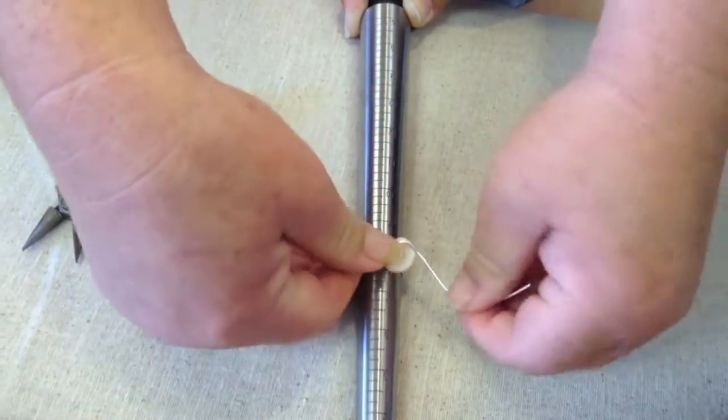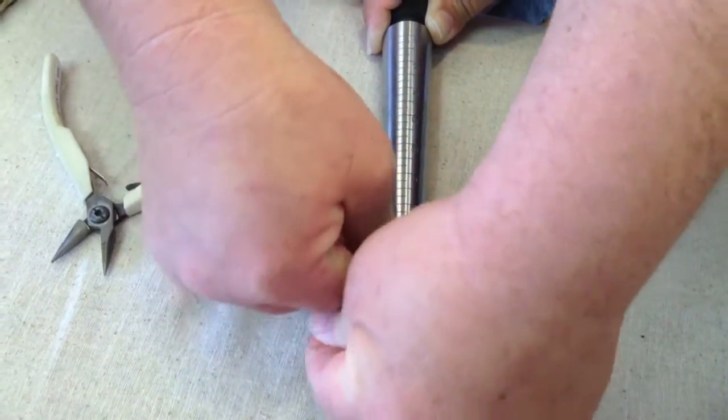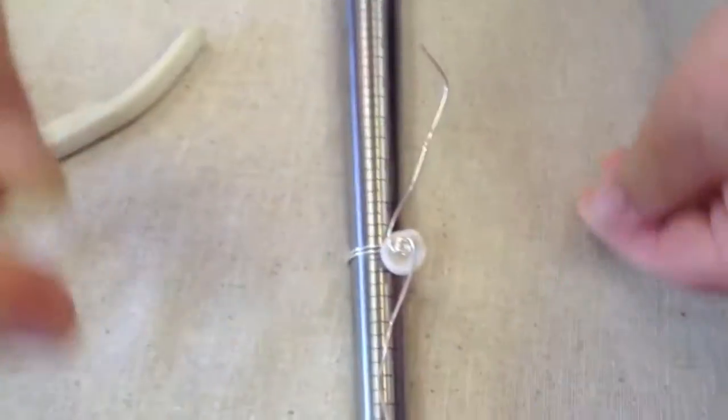Keep going until you have the size of coil that you want. You can make a tiny one or a big one, that's up to you.